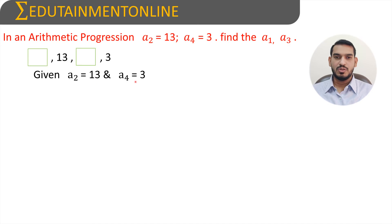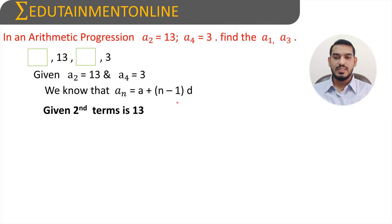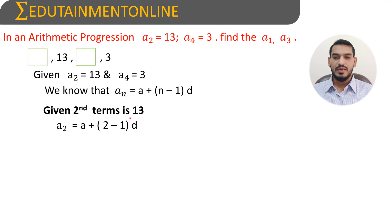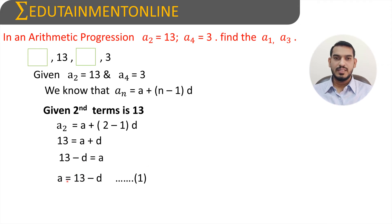We have a2 is equals to 13 and a4 is equals to 3. We know the formula for the nth term of an AP, which is a plus n minus 1 into d. Since the second term a2 is given as 13, we substitute n=2: a2 is equals to a plus 2 minus 1 into d. Since a2 is equals to 13, we get 13 is equals to a plus d. So a is equals to 13 minus d. Consider this as equation 1.